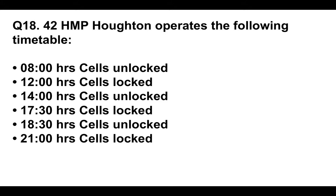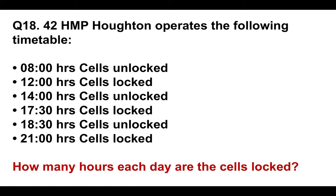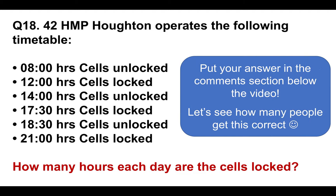Question eighteen — your turn. HMP Houghton operates the same timetable: cells unlocked at 0800, locked at midday, unlocked at 1400, locked at 1730, unlocked at 1830, locked at 2100. But this time the question is: how many hours each day are the cells locked? There is something important to take into consideration with this response. Please put your answer to question 18 in the comments section below.